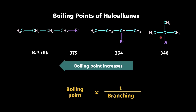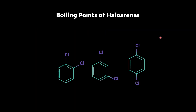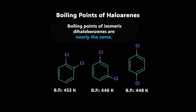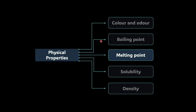Now let's talk about the boiling point of haloarenes. Taking a dihalo compound: 1,2-dichlorobenzene, 1,3-dichlorobenzene, and 1,4-dichlorobenzene — the boiling points of all three are very similar. So we can say the boiling points of isomeric dihalobenzenes are nearly the same.